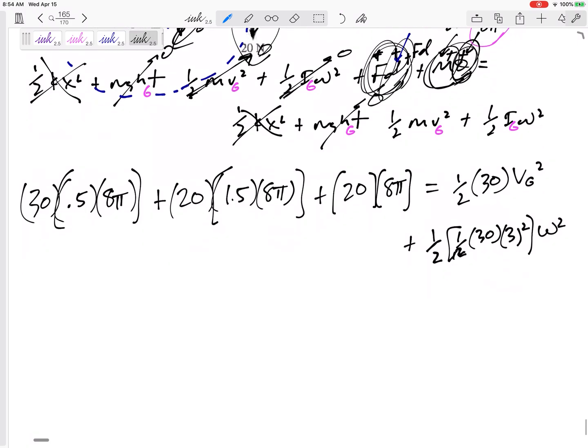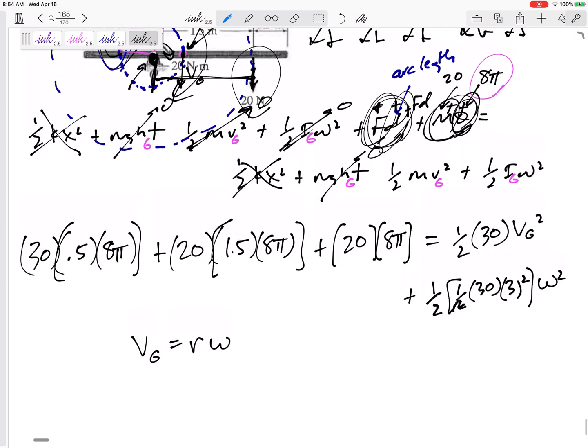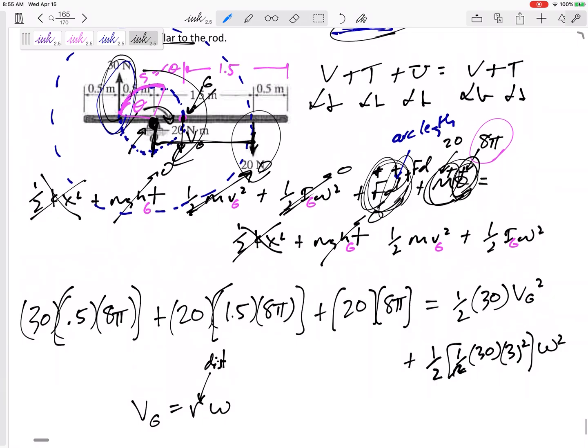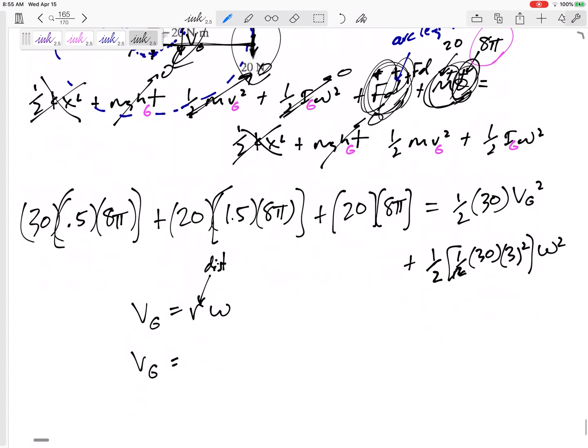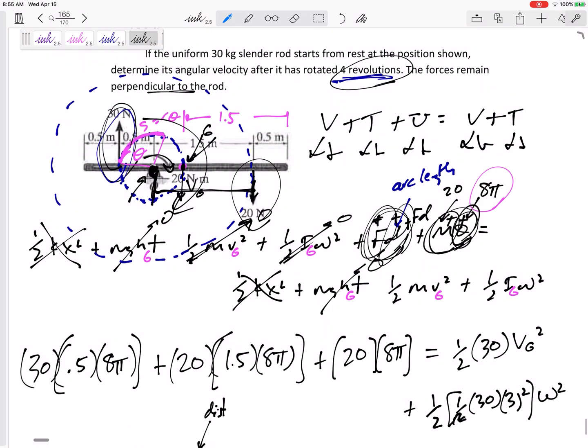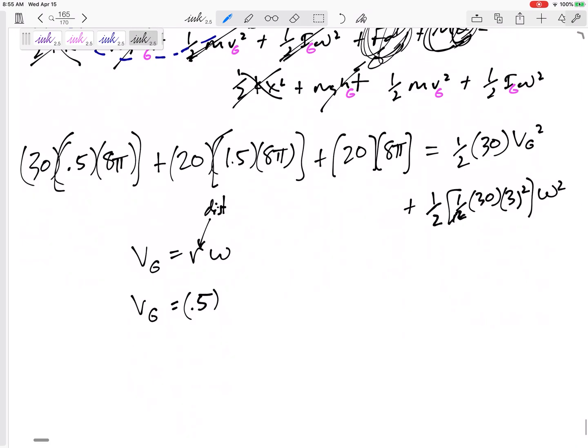That's only one equation, I have two unknowns, vg and omega. But is vg related to omega? If I know the center of rotation and I know the distance that r is away from the center of rotation, then yeah it is related to omega. So vg would be r, r would be 0.5, right? Because G, the center of gravity, the center of rotation, 0.5 away. So 0.5 omega is what I'm going to plug in right there.